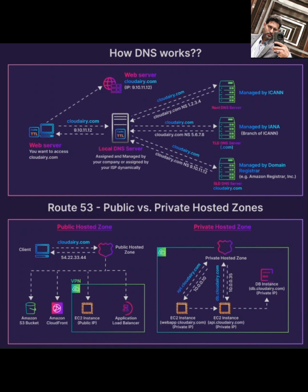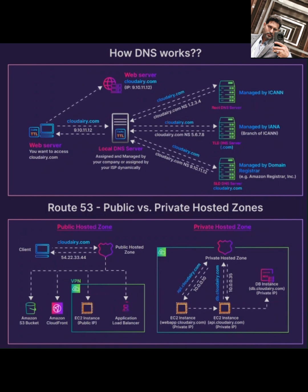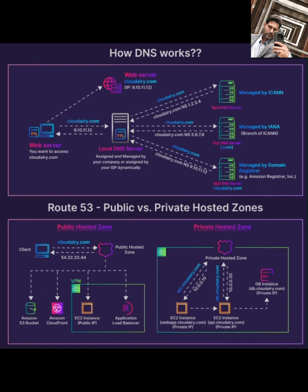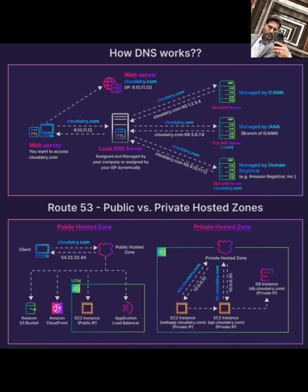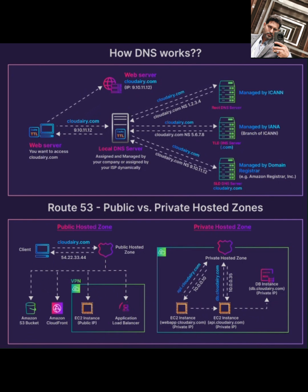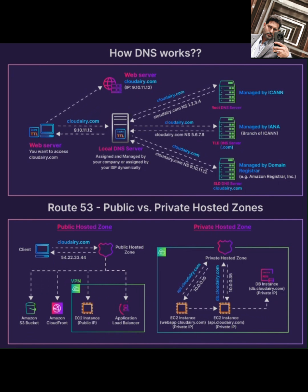Now, where do these nameservers get this information? It's stored in things called resource records, or RRs — the fundamental data entries in DNS servers. There are different types: A records store the most common type, the IPv4 address, like 54.22.33.44. Quad-A records store the newer IPv6 addresses. MX records tell email servers where to send email for that domain — the mail server address. CNAME records create aliases, pointing one domain name to another domain name, like www.bazaai.com pointing to just bazaai.com.